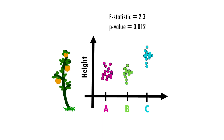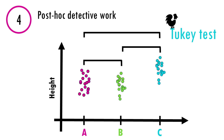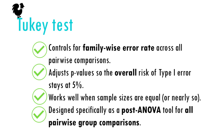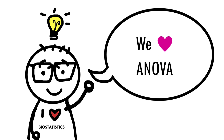But we still don't know which fertilizer is different. This leads us to step four. We often use a post-hoc test, like Tukey's test, to make pairwise comparisons and decide which fertilizers differ from each other: A versus B, A versus C, and B versus C. Tukey's test is a better option for multiple pairwise comparisons than a Student's t-test. Tukey's test assumes you've already found a significant result using ANOVA — it's designed to control the error rate after you've found a significant difference somewhere.